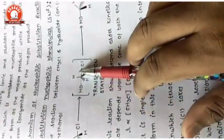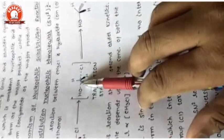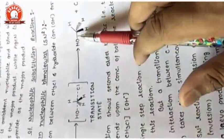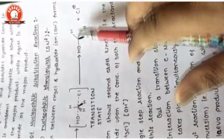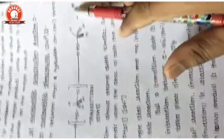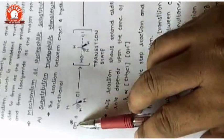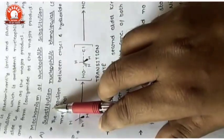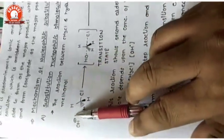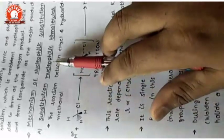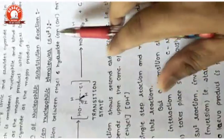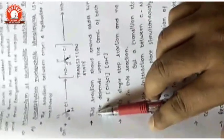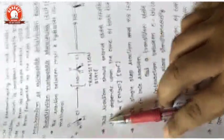The Cl bond breaks while the new bond with OH forms, so OH bonds clearly with carbon and the leaving group (Cl) is released. The nucleophile substitutes the chlorine — that is why it is called substitution, and the attacking species is a nucleophile, so it is nucleophilic substitution. It is completed in one step, making it a bimolecular reaction.